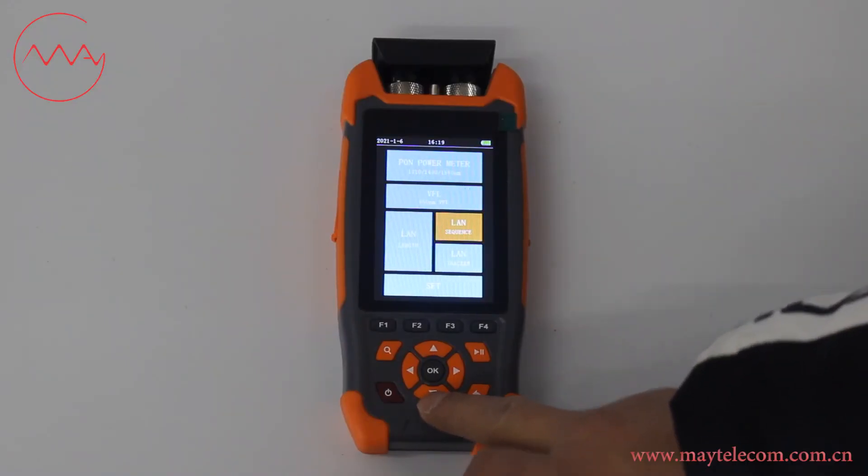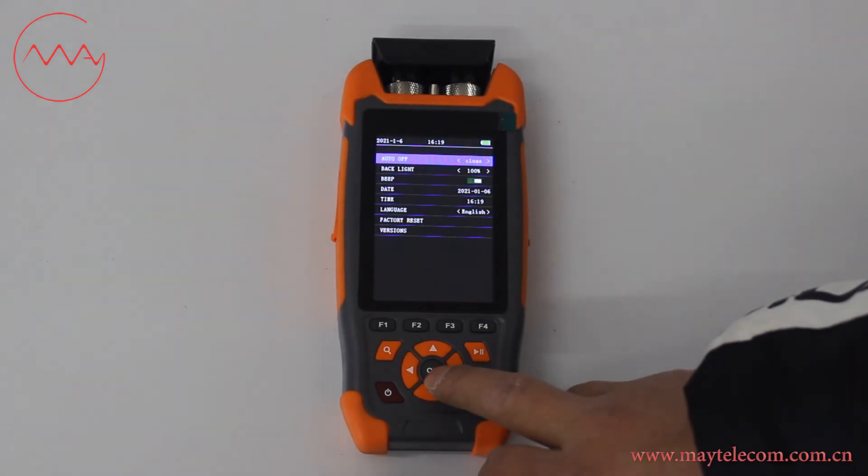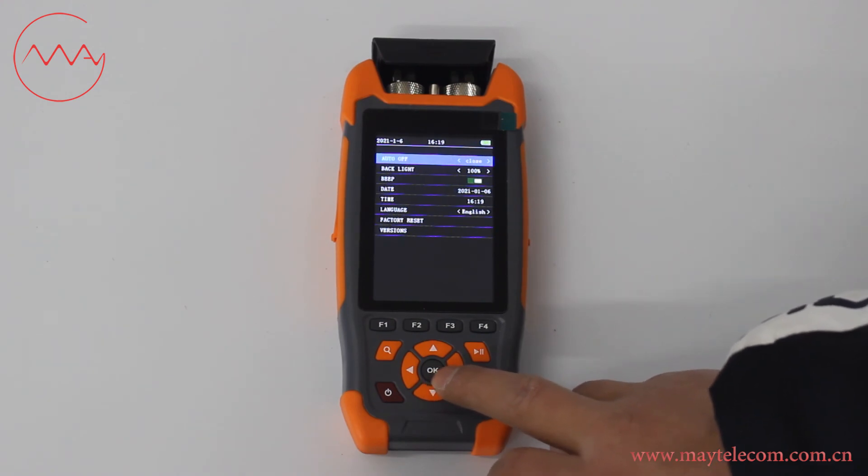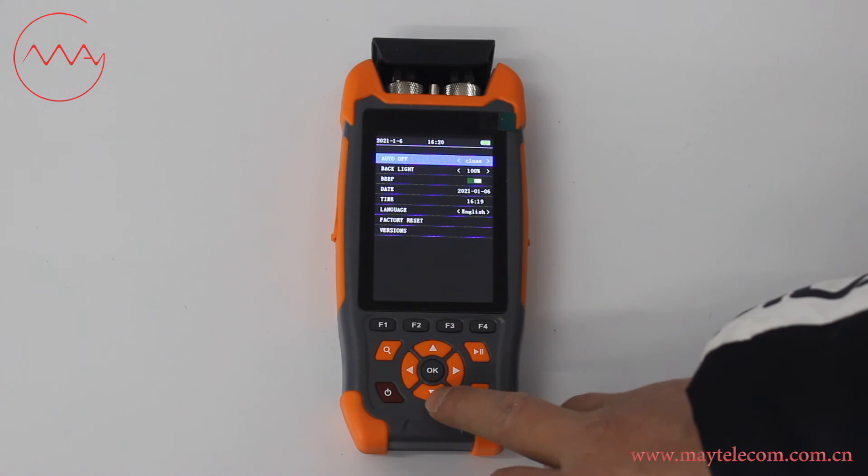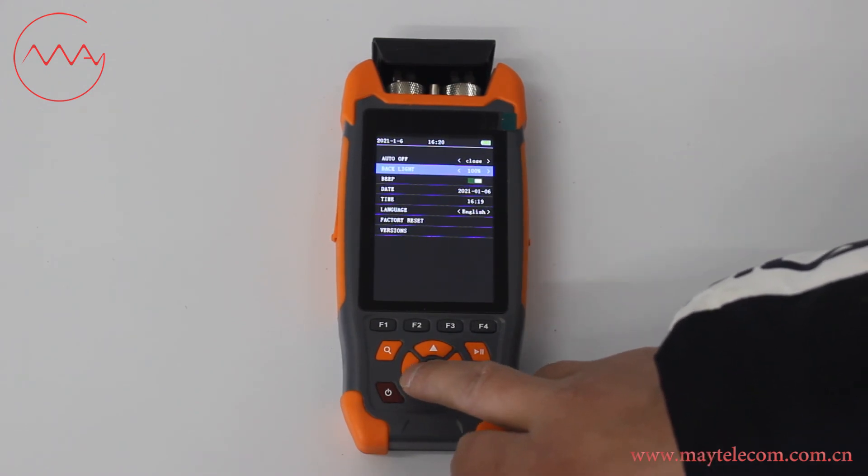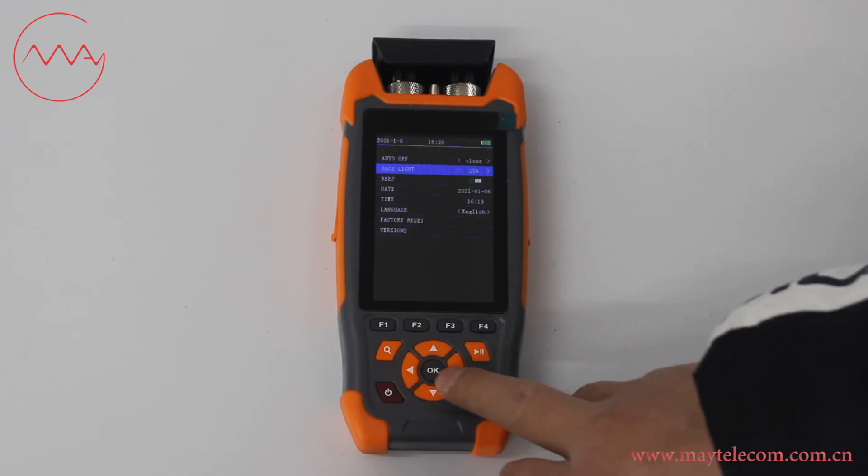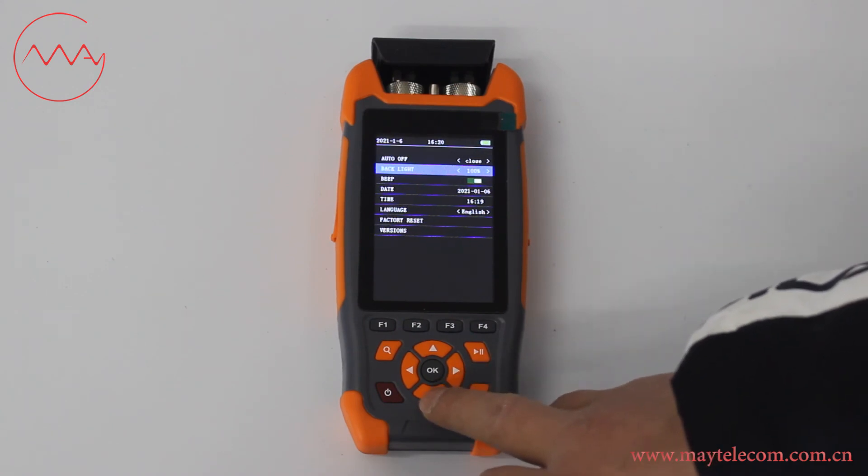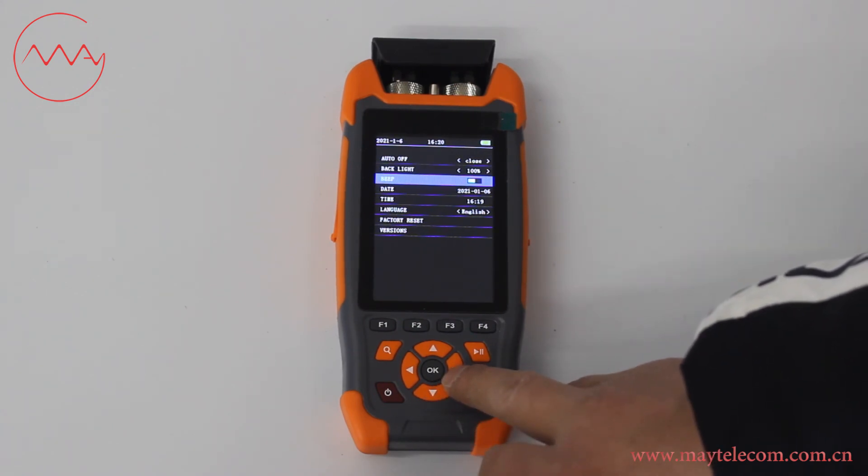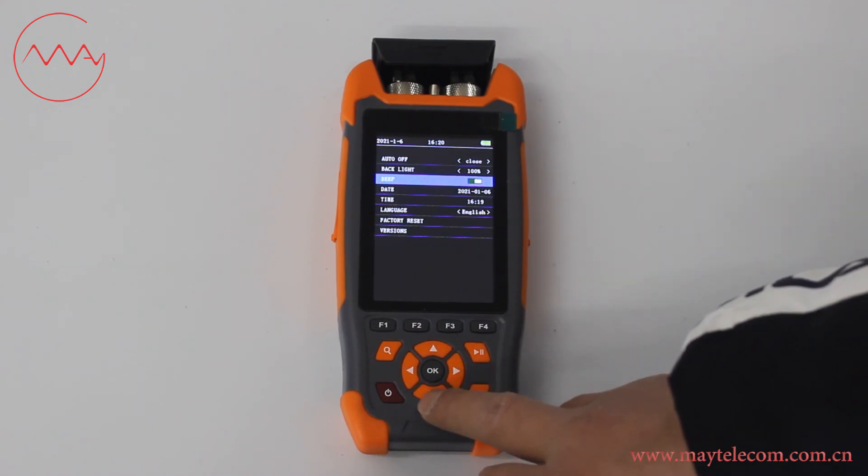Press navigation keys to select Settings and press OK. Use left or right navigation keys to set time order. Press down key to select backlight. Use left key to change backlight settings. For beep, close or open it.